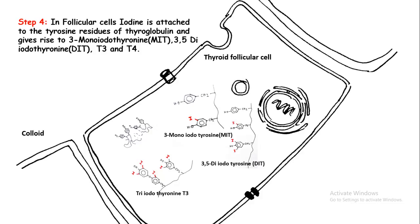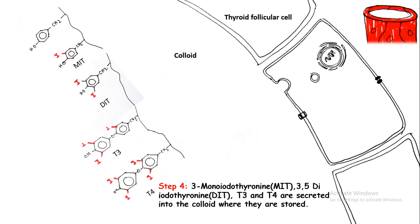Two DIT molecules can combine with each other to form tetraiodothyronine, or T4. T3 and T4 are the key hormones secreted by the thyroid gland. After production, T3 and T4 are secreted into the colloid, where they are stored and await a signal for release.